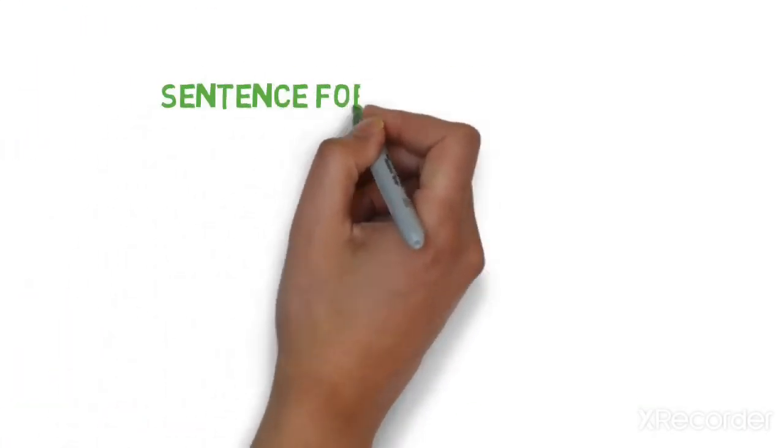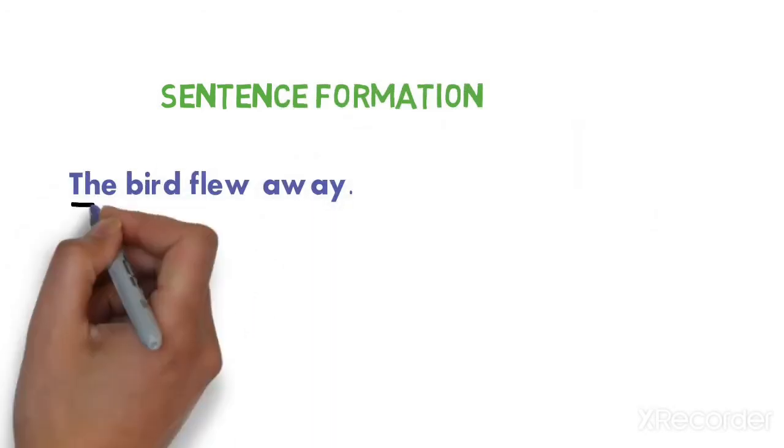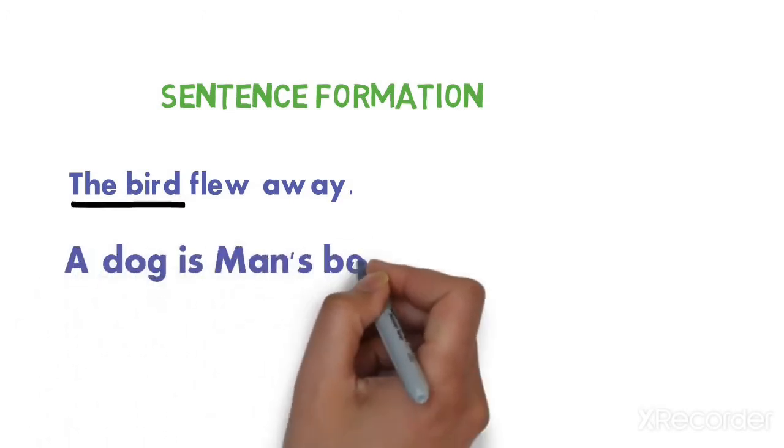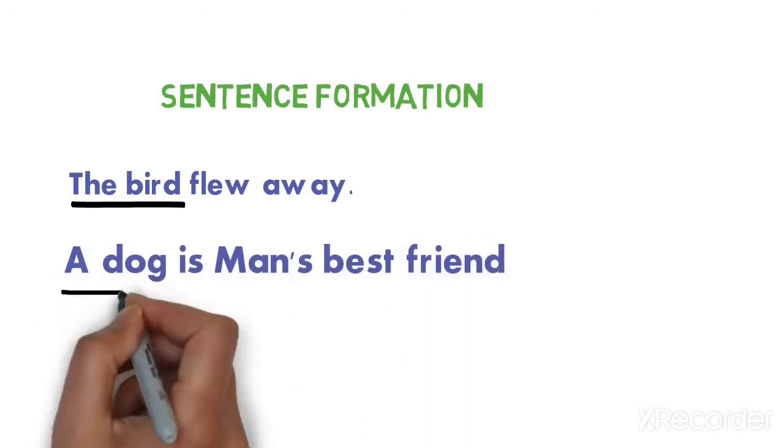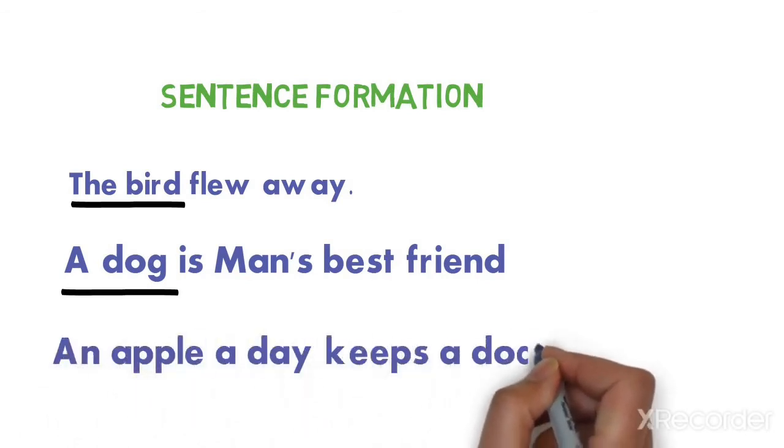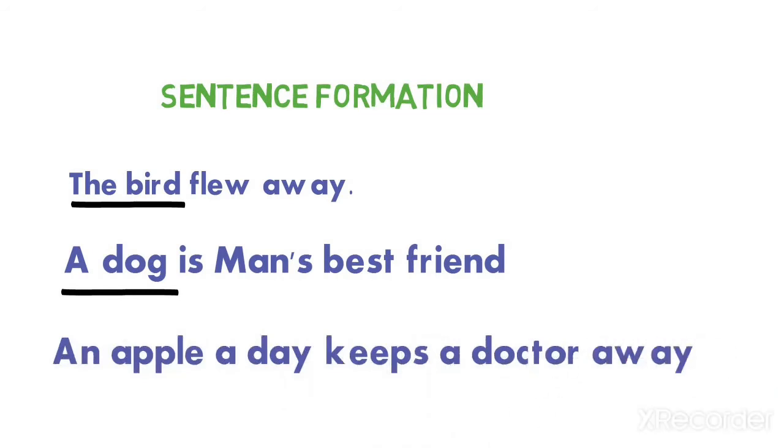Let's see the examples in these sentences. The bird flew away. Here the bird means we are talking about only a single bird. A dog is man's best friend. A dog means we are talking of only a dog, single dog. And an apple a day keeps a doctor away. How many apples are we talking here? We are talking about only a single apple.